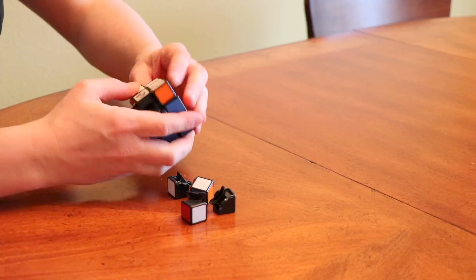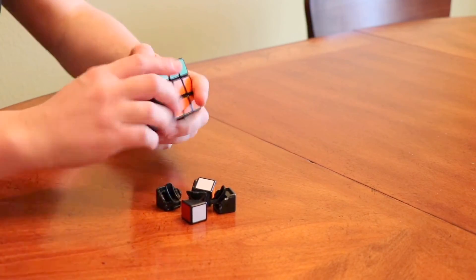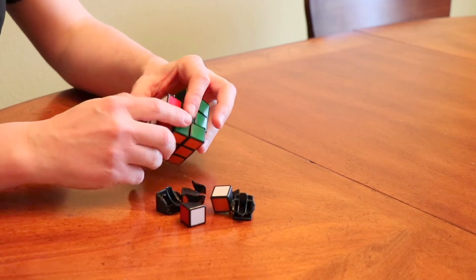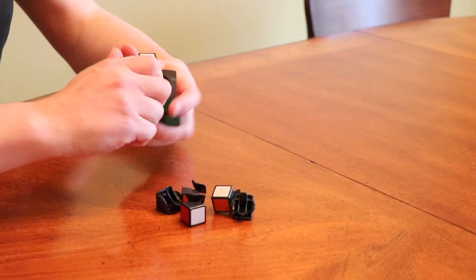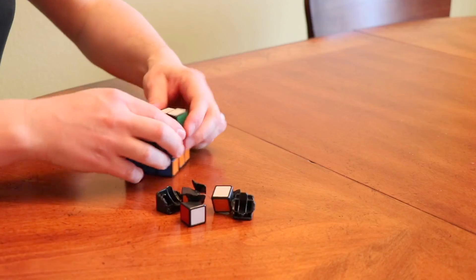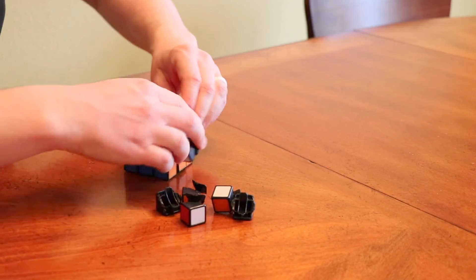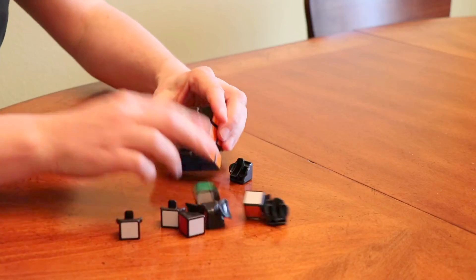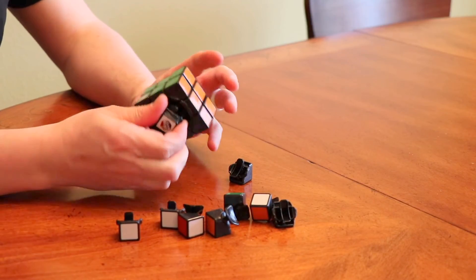As you can see, sometimes they kind of get stuck here. But you know, if you turn them in the right way, the right angle, they will pop up like this. Here we go, like that. Now the first layer is out.